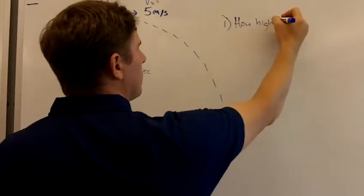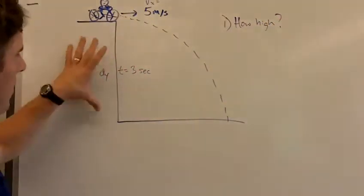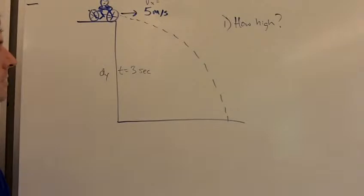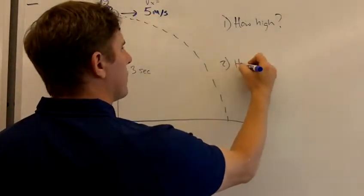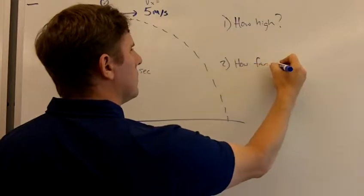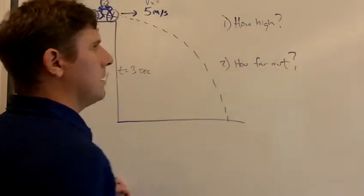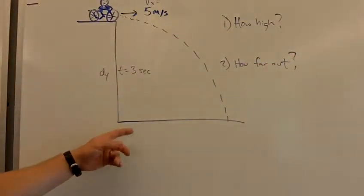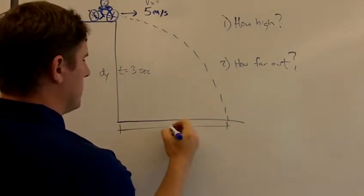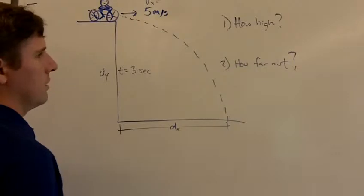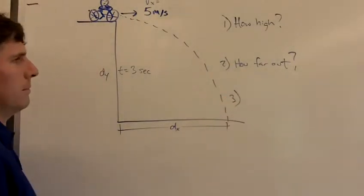Same cliff, same question—what is this distance d in the y direction? We also want to know how far out did he land, how far out meaning distance in the x direction. And then the third question we could ask is, why is this guy such an idiot for riding off a cliff?